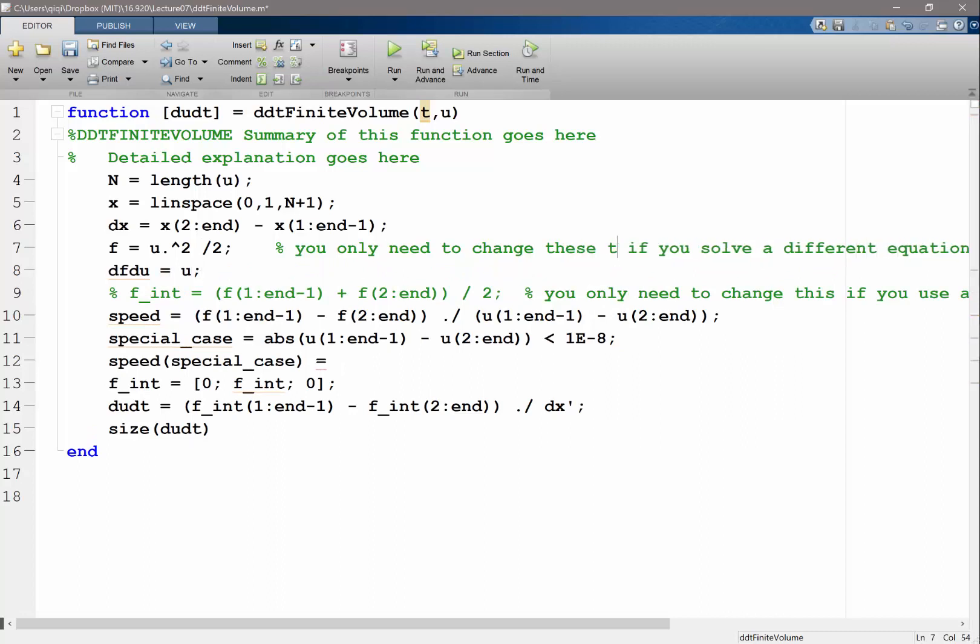So dfdu equals u, this equals dfdu special_case. Alright, we've calculated the speed of discontinuities. It's discontinuity or characteristic - either way, it's pretty much the same thing.